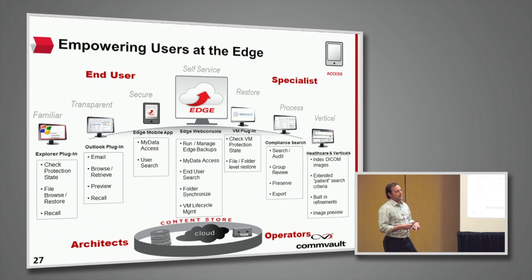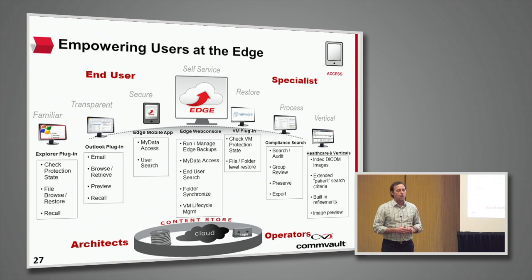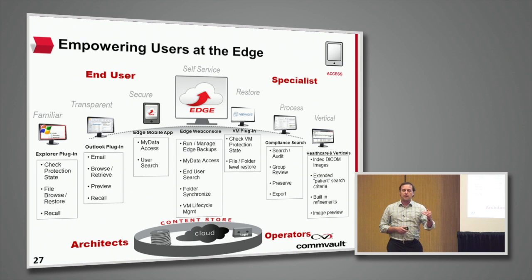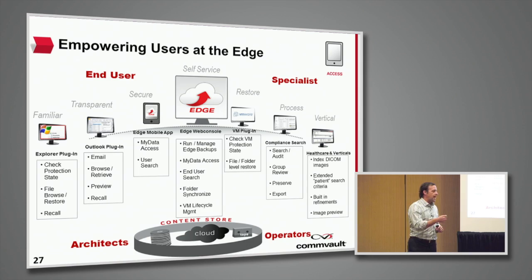Phil was just talking about One Pass when it comes to file system and email. One of the big things in version 10 is the ability to have a plug-in to Outlook so that you can natively get to archived email. You run the One Pass process — it scans, does the backup, does the archive, does the reporting — but then it's available natively through the application for that end user. So I can go in and see all my archived email natively through Outlook. I don't have to go into another interface or go to the help desk and ask them to restore something.